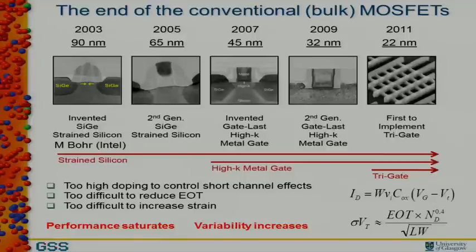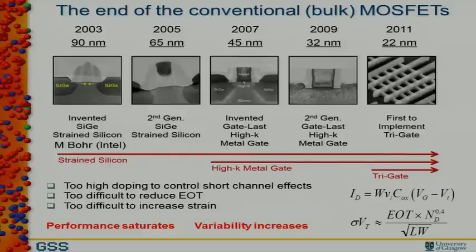Bulk scaling has been dead for about 10 years. There is no more lithography scaling delivering improvement in device performance, circuit performance, or transistor count simply by shrinking technology. To make bulk transistors work with scaling, a lot of innovations were needed. First, strain was introduced, carrying bulk technology through two generations. Then the gate dielectric was replaced with a high-K gate stack — a very difficult problem — but this allowed another two generations before hitting a kind of brick wall.